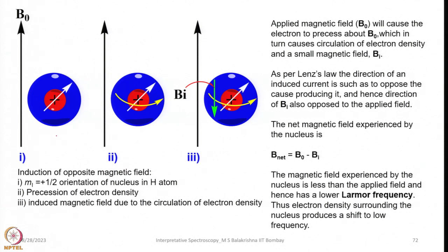Regarding induction of an opposite magnetic field: when the nucleus is in the m = +½ orientation, there is precession of electron density surrounding this proton. The induced magnetic field B_i generated due to circulation of electron density opposes the applied magnetic field B_naught. The applied magnetic field causes the electrons to precess about B_naught, which in turn causes circulation of electron density and generation of a small magnetic field B_i.